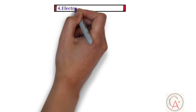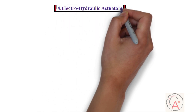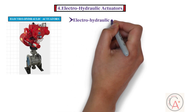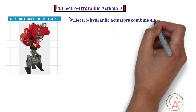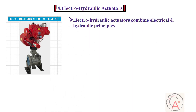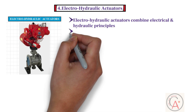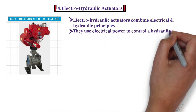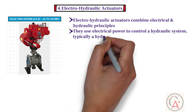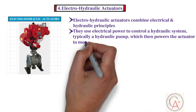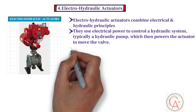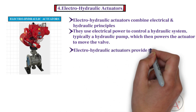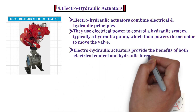The fourth type is electro-hydraulic actuators. Electro-hydraulic actuators combine electrical and hydraulic principles. They use electrical power to control a hydraulic system — typically a hydraulic pump — which then powers the actuator to move the valve. Electro-hydraulic actuators provide the benefits of both electrical control and hydraulic force.